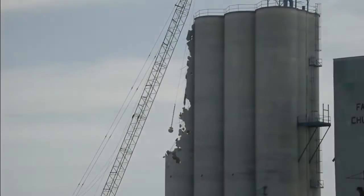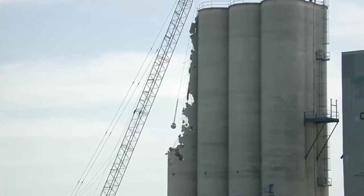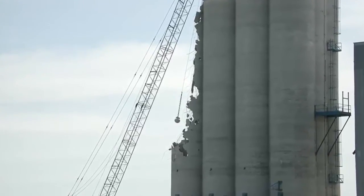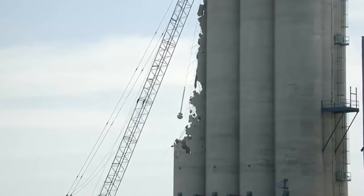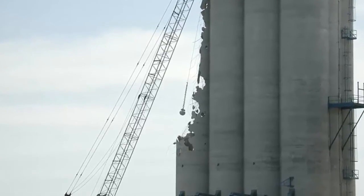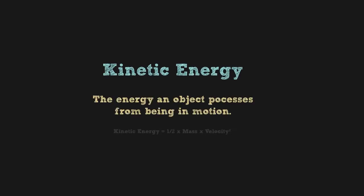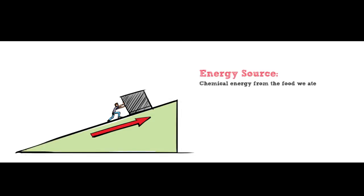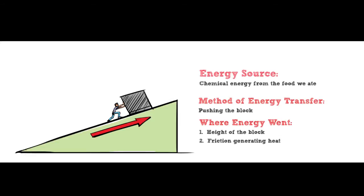We also know a wrecking ball swung by a crane can break a wall to pieces, which is the wrecking ball doing work. An object in motion can also store energy — this energy is known as kinetic energy. With these two energies, it's possible to analyze almost any system by looking at the energy sources and how they're used to perform work, along with where the energy actually goes.